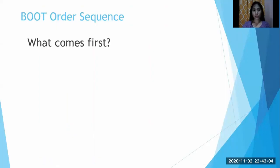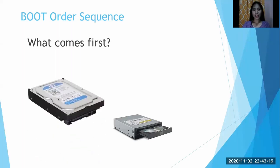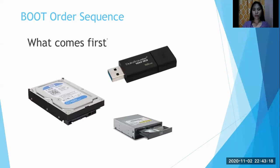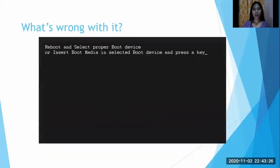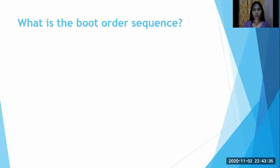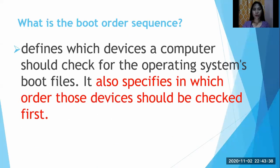From the boot order sequence — what comes first? Is it the optical drive, the hard disk, or the removable disk drive? What is the boot order sequence? It defines which device a computer should check for the operating system's boot files. It also specifies in which order those devices should be checked first.